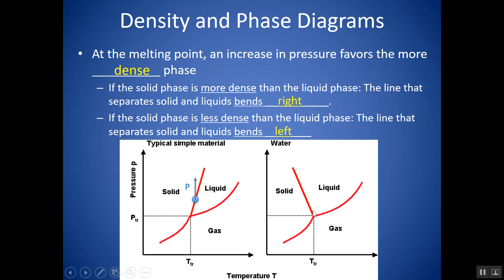Notice that if this line leans to the left, and you pick a point on it and increase the pressure, you would turn into liquid. That means liquid is the more dense phase — and that will always be the case when this line is bent to the left.